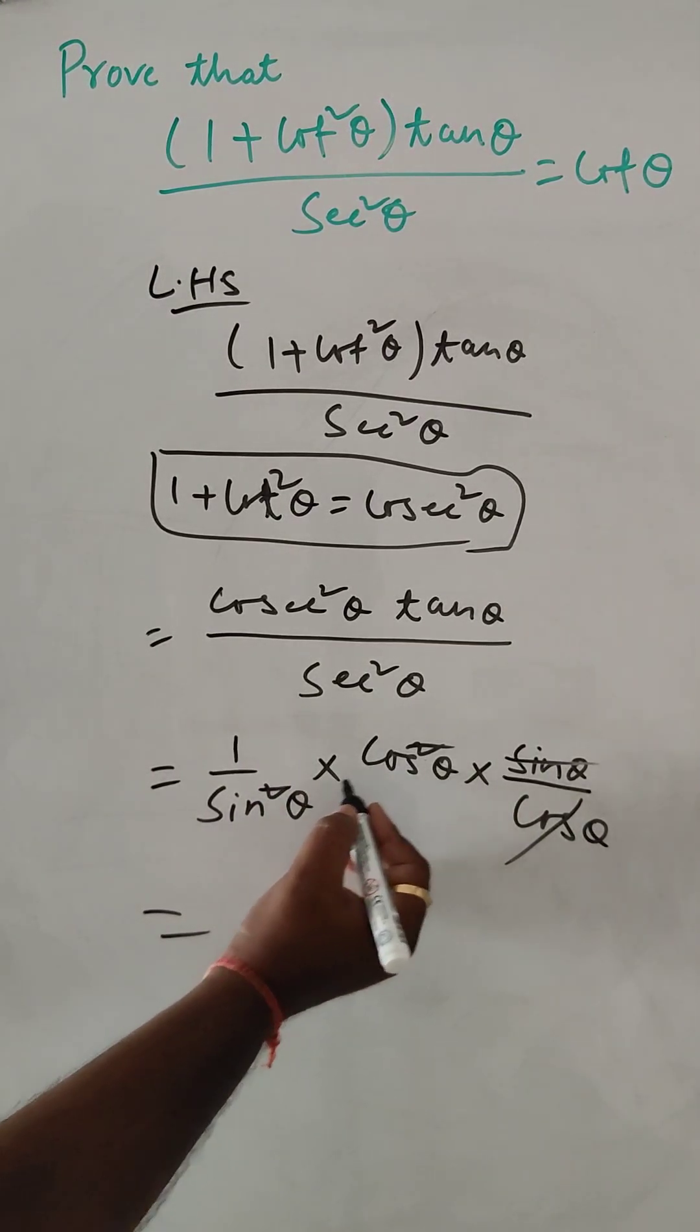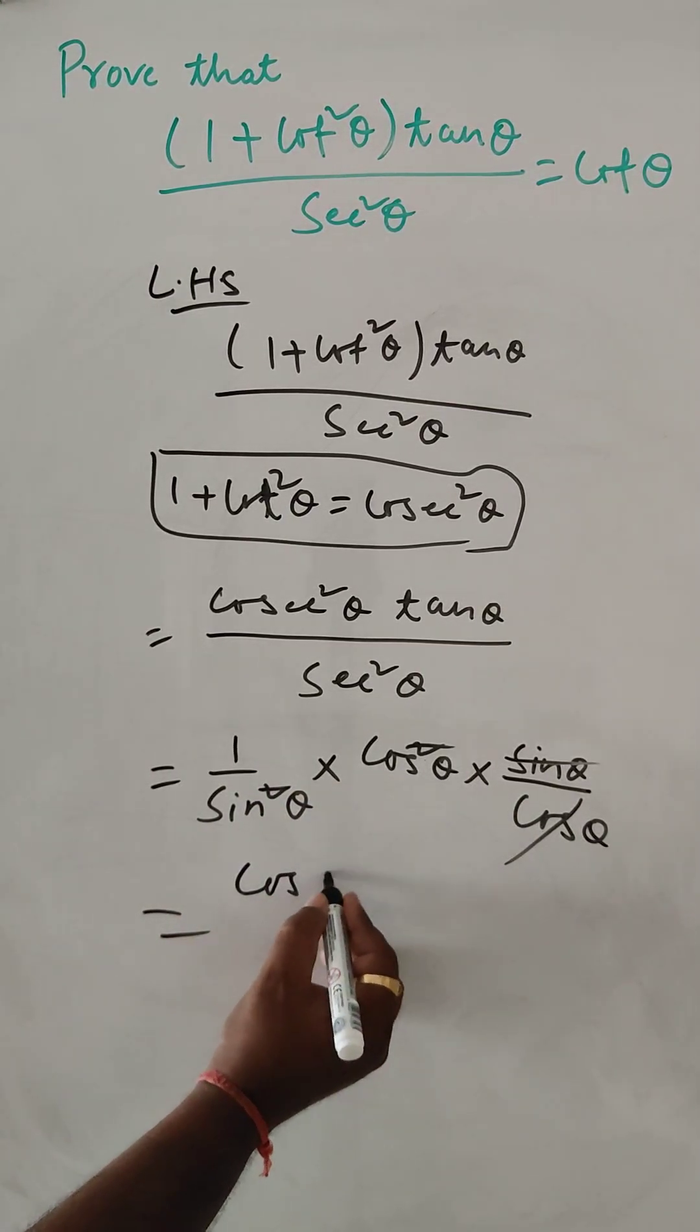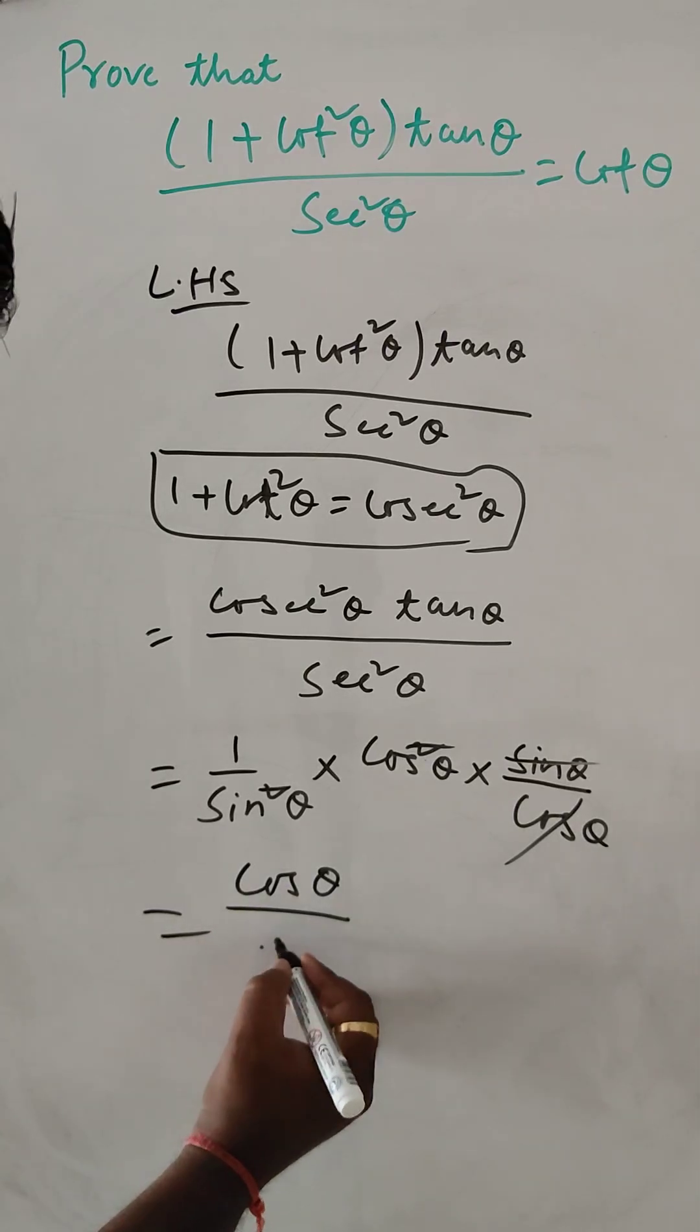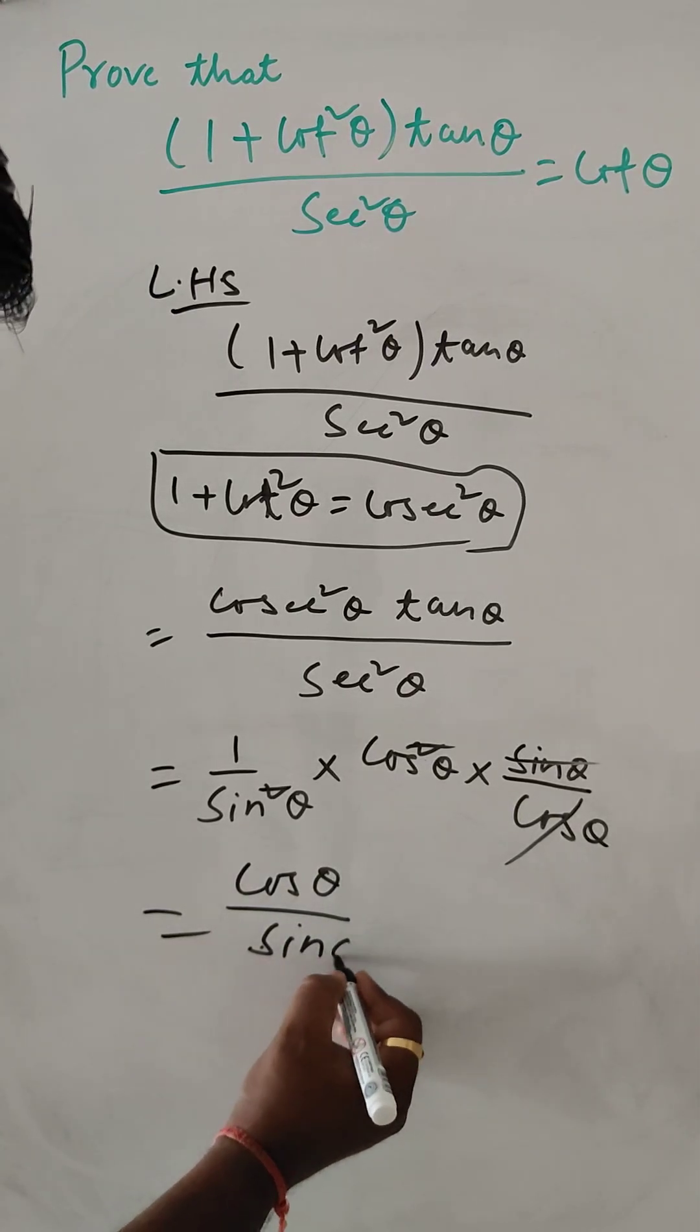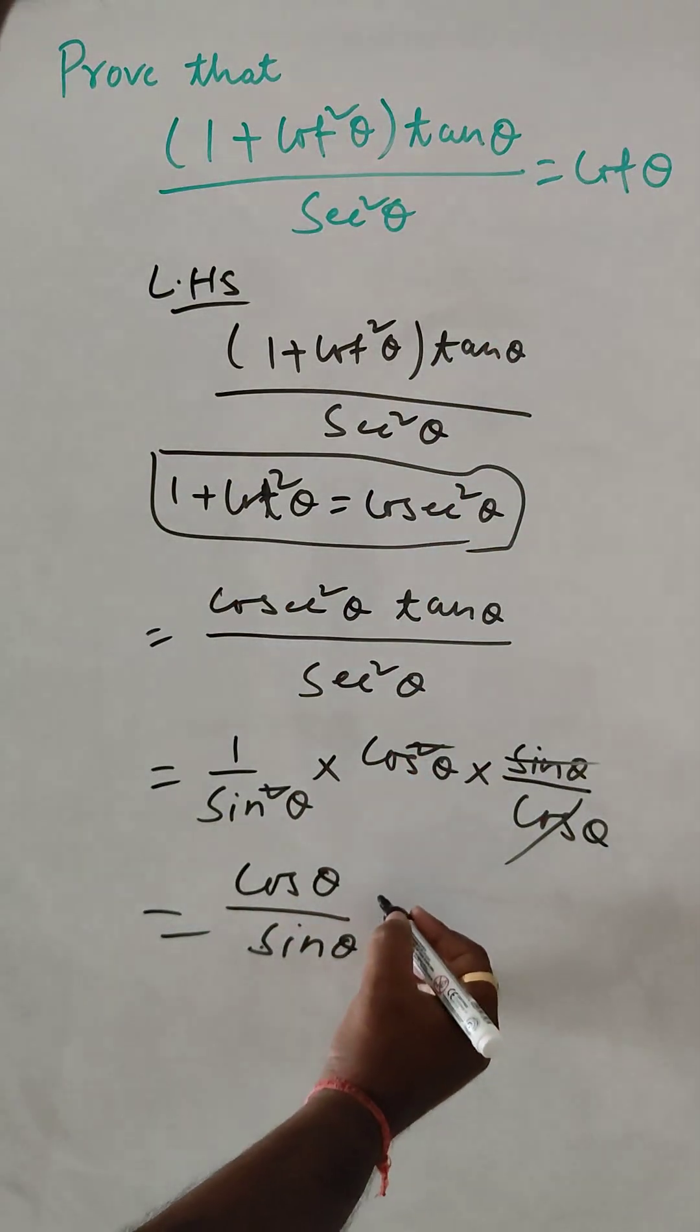So what is left? Cos by sine. Cosθ divided by sinθ. What is that? Cotθ.